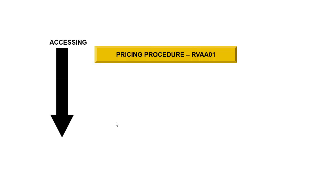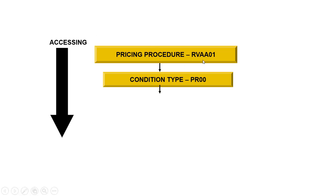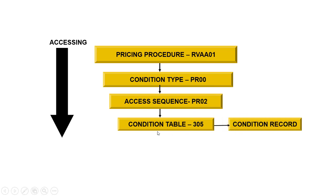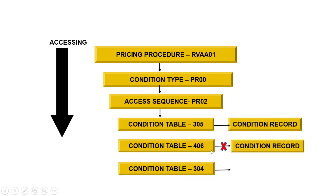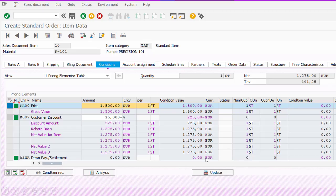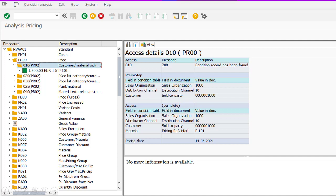If I try to create an order, let me show you how the system will behave in a graphical manner. First the system determines your pricing procedure, then condition type, then access sequence. Then it finds the first table — 305, customer and material specific condition record. If the system finds a record there, it will stop accessing the remaining tables, 406 and 304. Here is an example where I have just created a sales order and the system found the condition record from the first table, table 305.